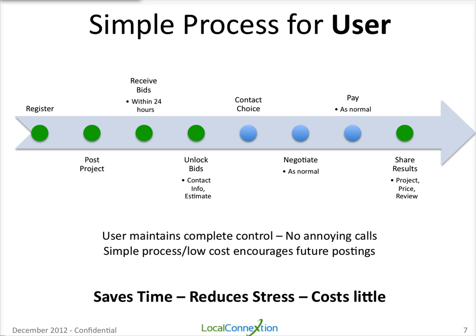The service provider can finalize their bid, and once they perform and complete the job, the customer pays as normal. We don't get involved in any of that — we don't say the customer has to pay Local Connection. We just connect; all we're doing is connecting the two and making it easier for both parties. After the job is done, the customer can review the service provider. These reviews can't be fake — the only way you can review a service provider is once you've actually completed a job. It's a closed circuit, so you can't fake the review. The user maintains complete control, there are no annoying phone calls, it's low cost, saves time, reduces stress, and costs very little.